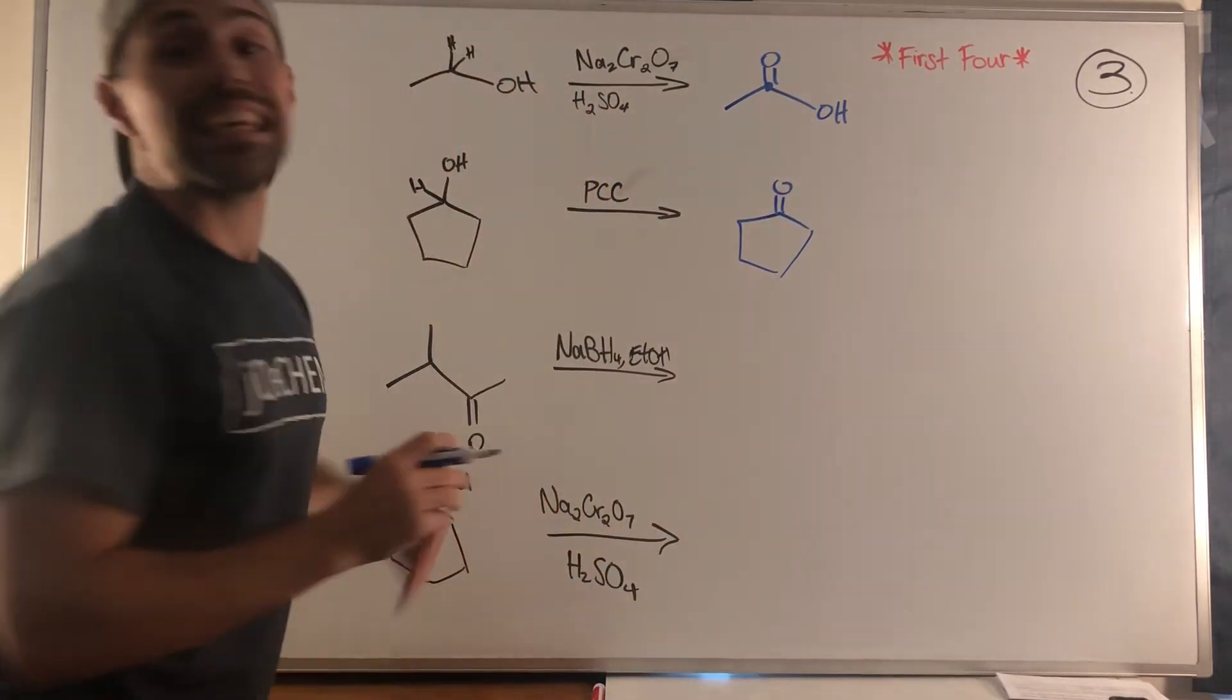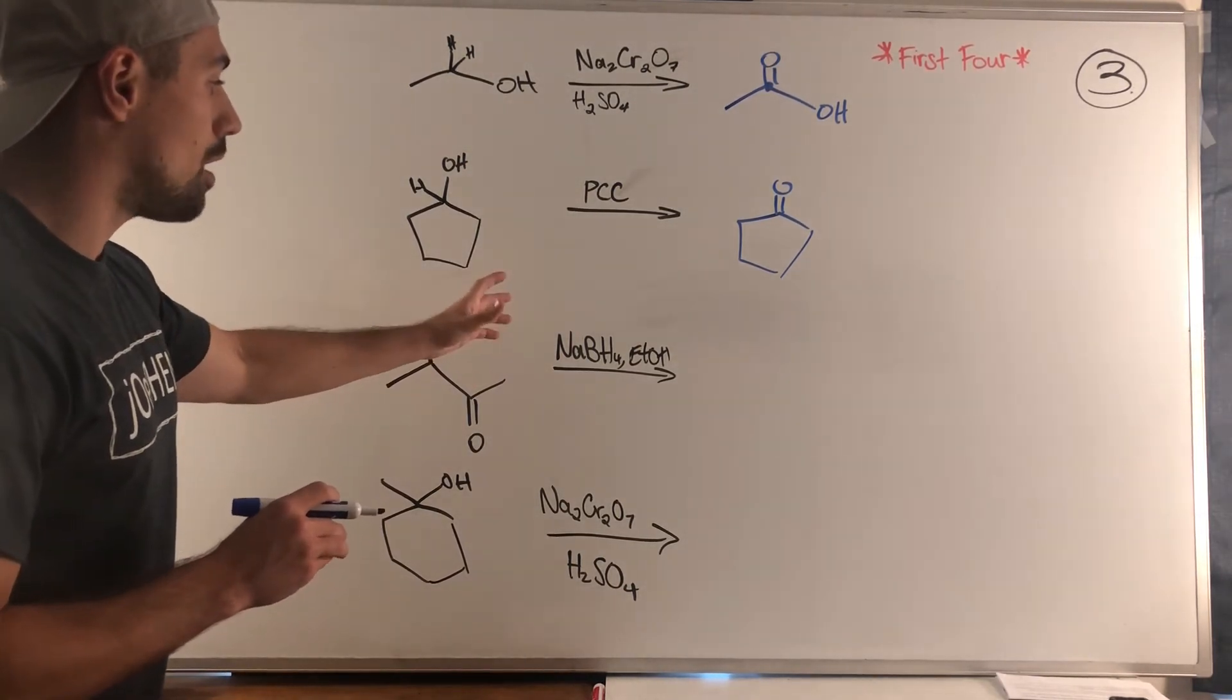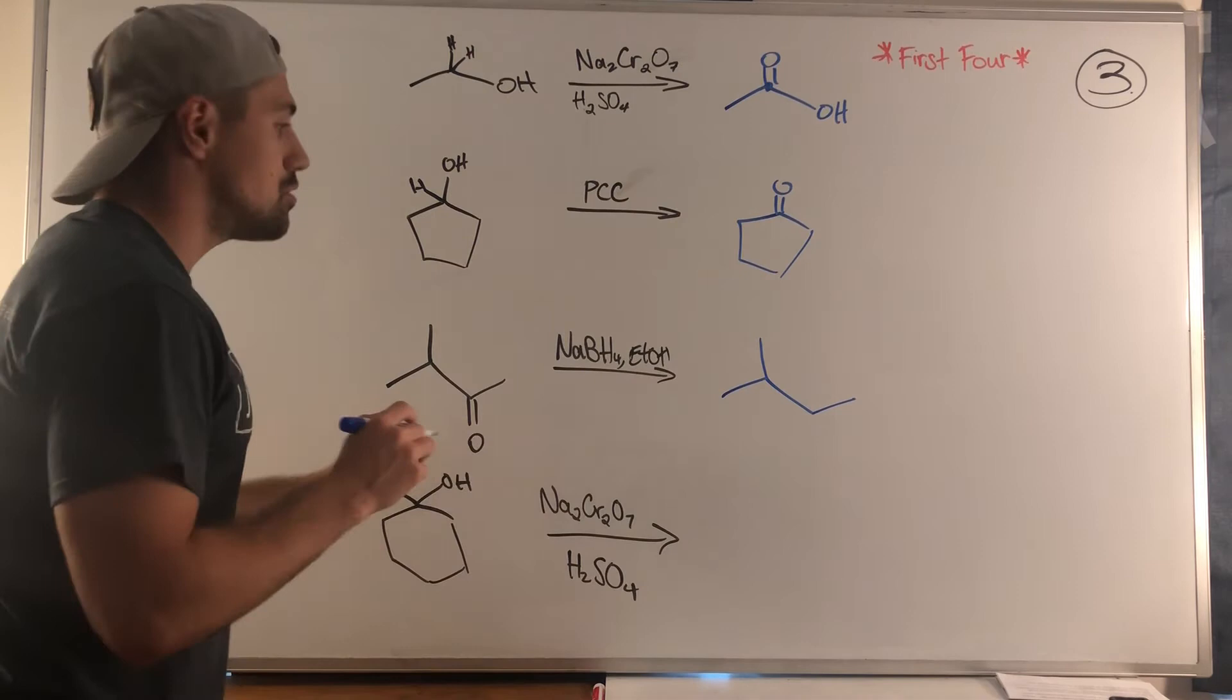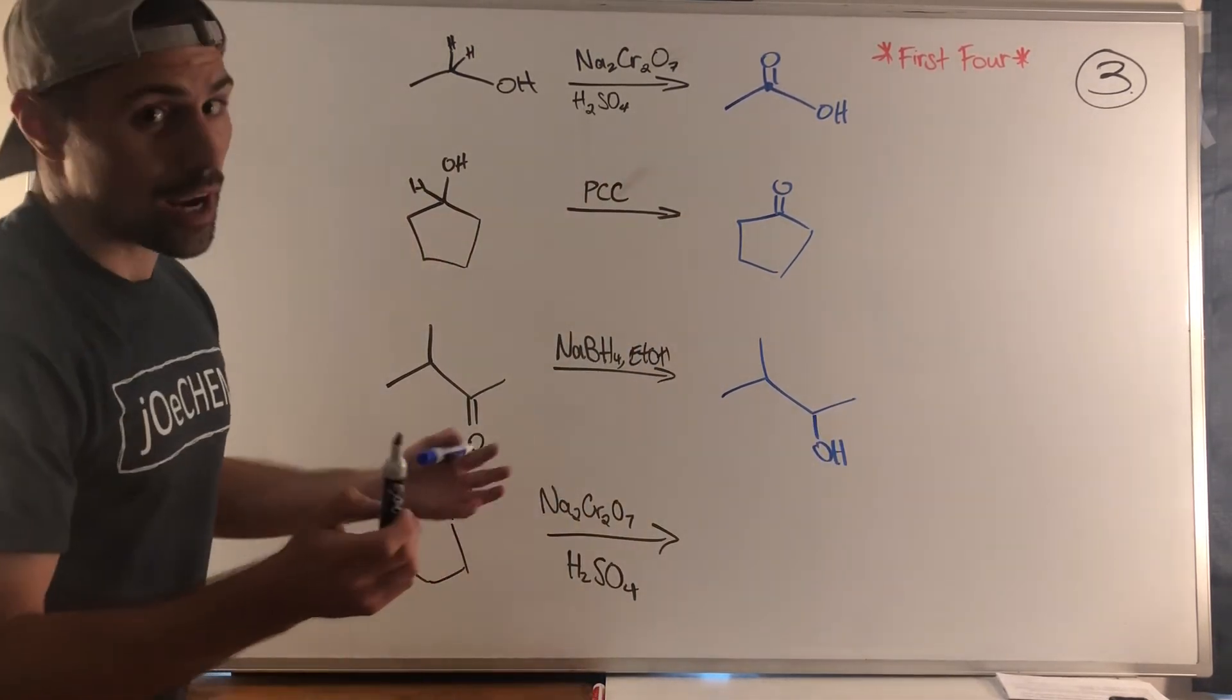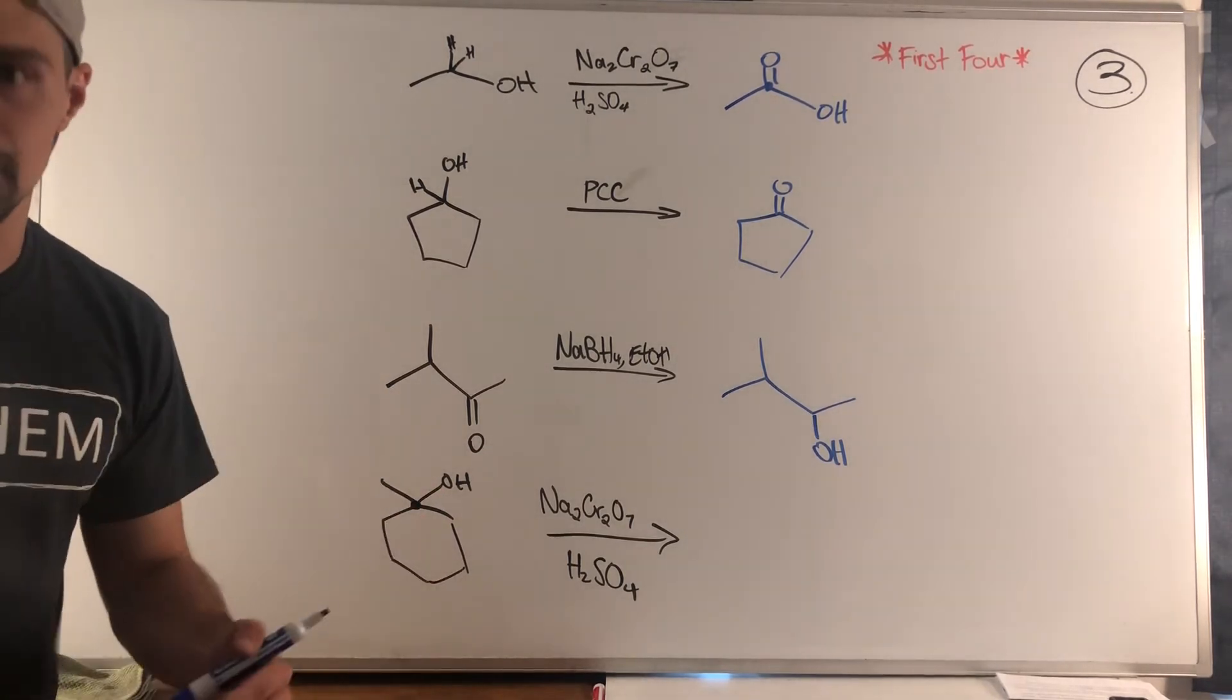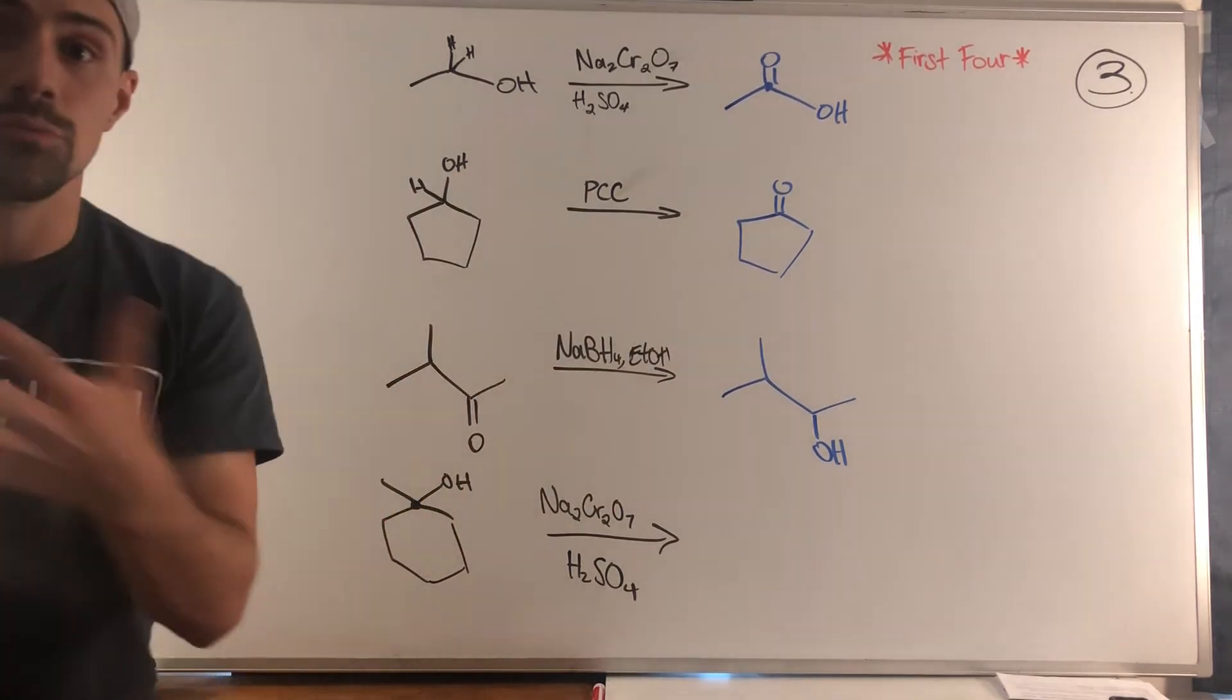In the third problem we have NaBH4 and ethanol, so we will take that ketone down to a secondary alcohol. Then I'm being a little tricky in this last problem - this is a tertiary alcohol, we have no bonds to hydrogen.